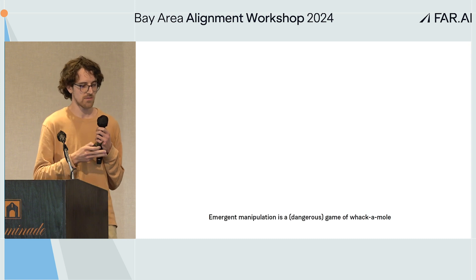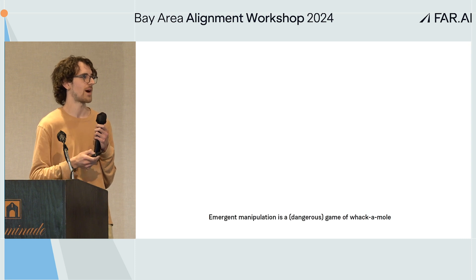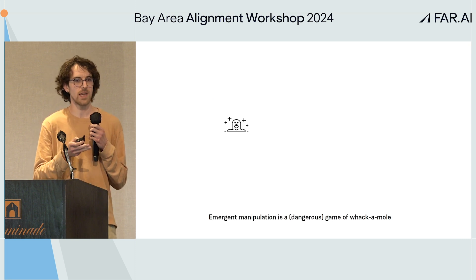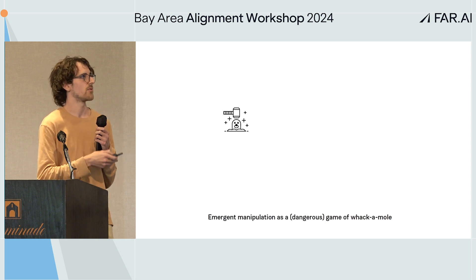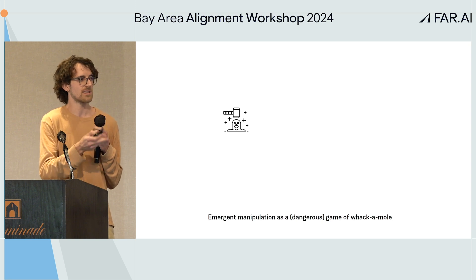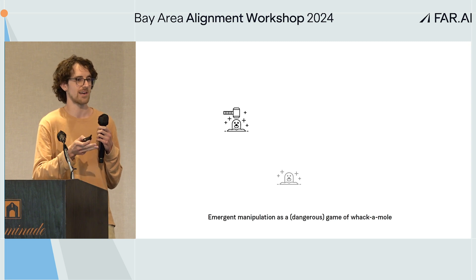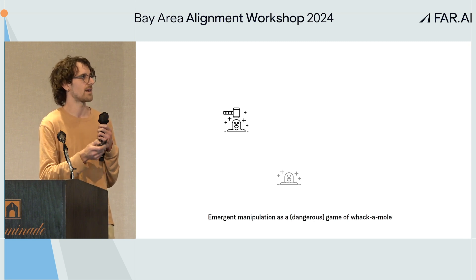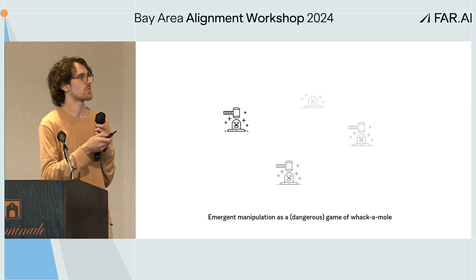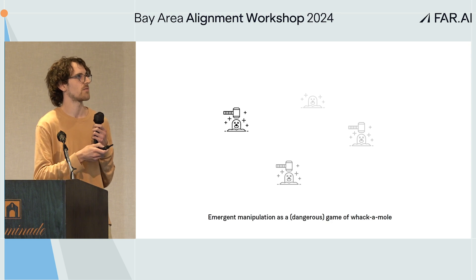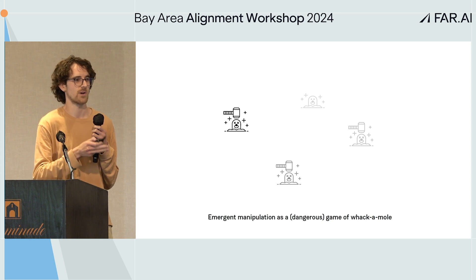This is a good example of how emergent manipulation can be a dangerous game of whack-a-mole. A manipulative behavior emerges because it's incentivized by imperfect user feedback. You detect it and remove it. But given that the incentive for manipulation is still present, it will just appear in a different form somewhere else, a little more subtle. Maybe you can detect it again, find a better detector, remove it, and repeat. But it's unclear whether this process leads to a good equilibrium, especially if manipulative behavior becomes subtler and subtler, gaming all your detectors one after another.